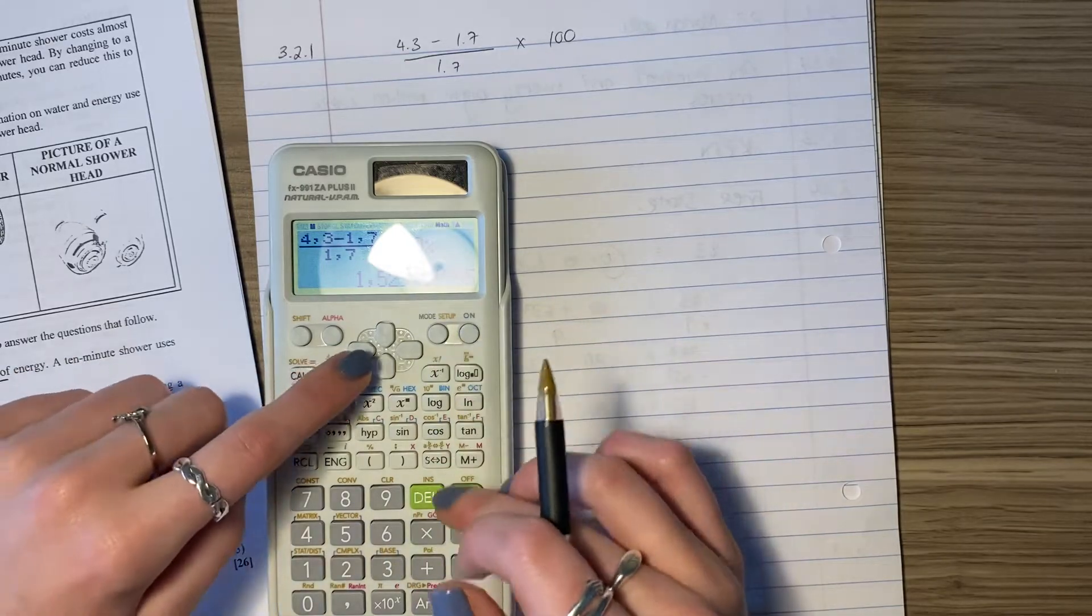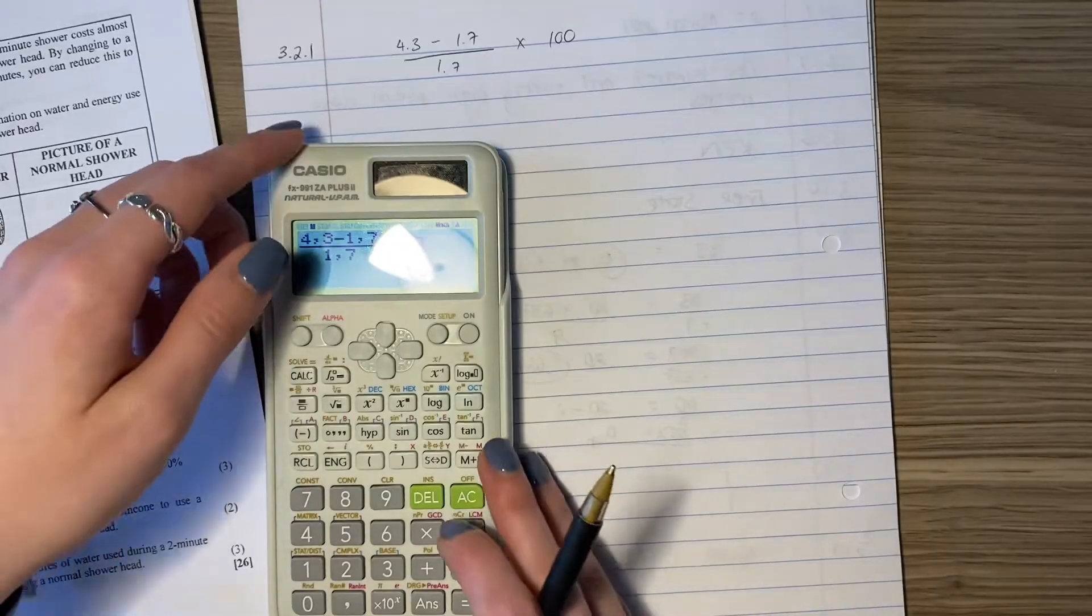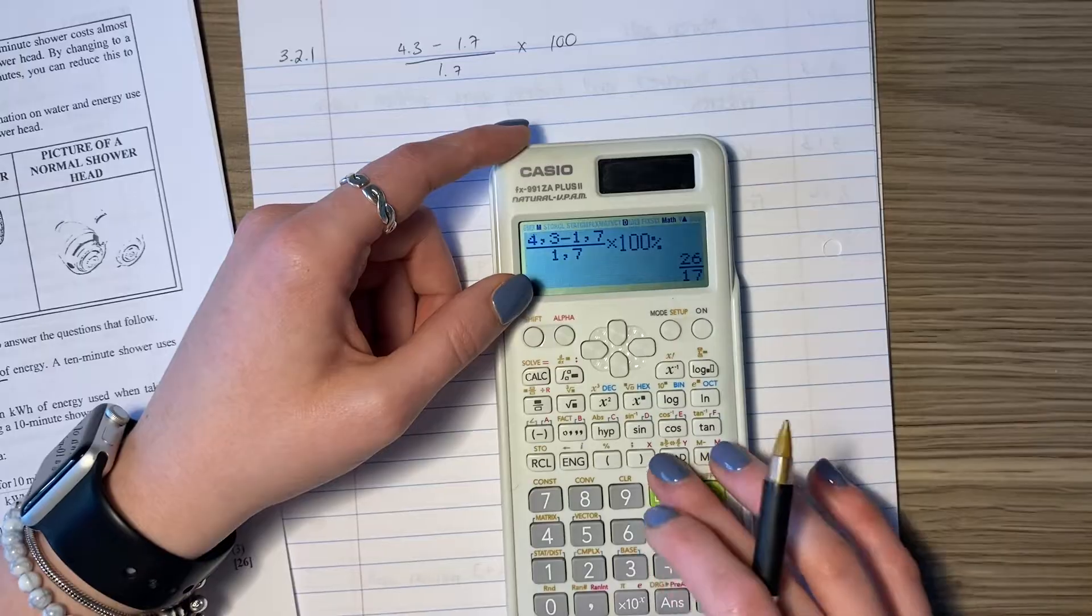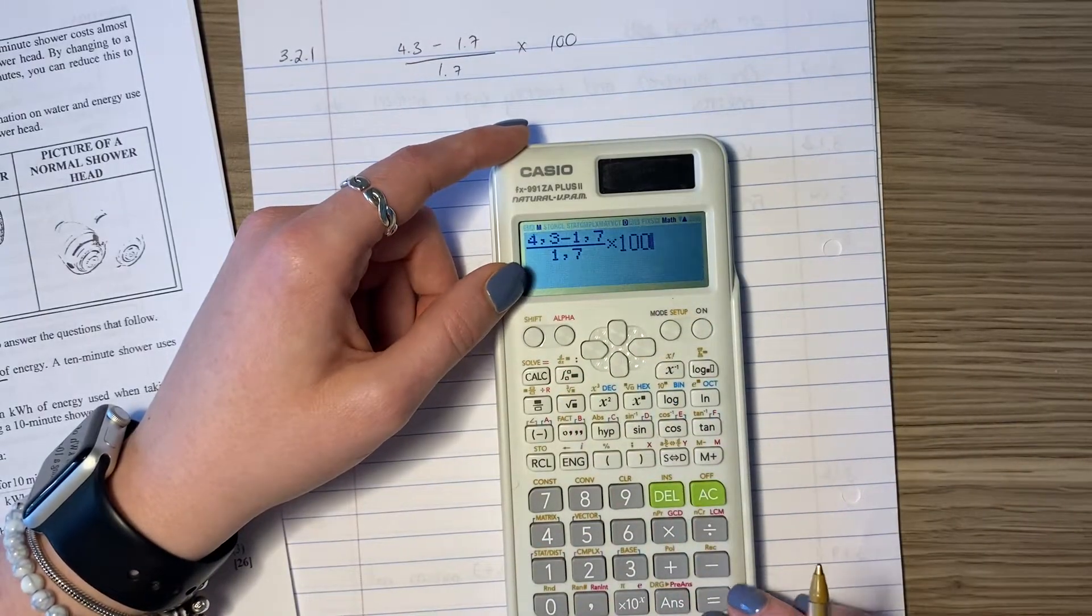So what you need to do is when you put this in, don't put the percentage sign in when you put it into your calculator. Don't put it in like this, because it gives you this weird answer, and that's not actually the right answer. So you need to not put the percentage sign in...